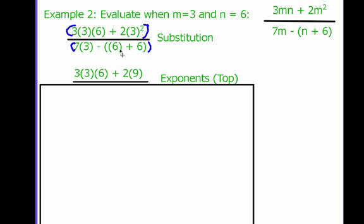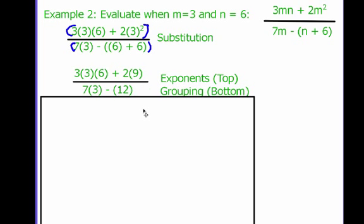On the bottom, we have some grouping symbols. I have 6 plus 6, and that gives me 12 on the bottom.